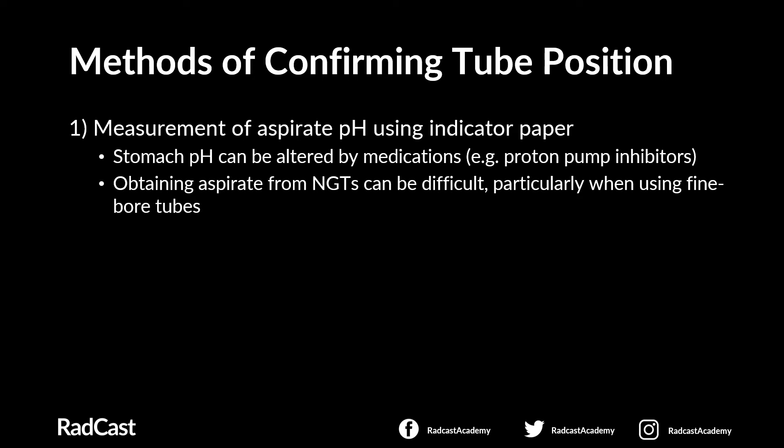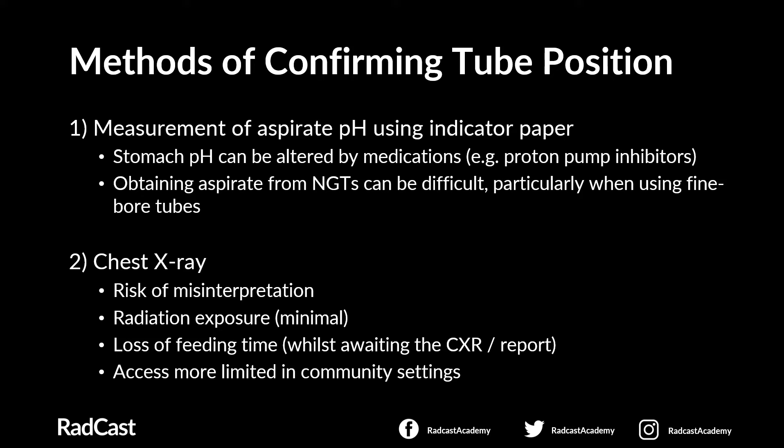There are two main methods for confirming tube position. The first is measurement of aspirate pH using indicator paper. If the NG tube is correctly placed in the stomach, you'd expect a pH of 5.5 or less; if incorrectly placed in the lung, a pH of 6 or more. Drawbacks include stomach pH being altered by medications such as proton pump inhibitors, and difficulty obtaining aspirate from fine-bore tubes. The second method, explored today, is chest x-ray, though there is risk of misinterpretation, minimal radiation exposure, loss of feeding time, and more limited access in community settings.